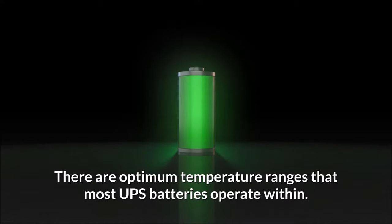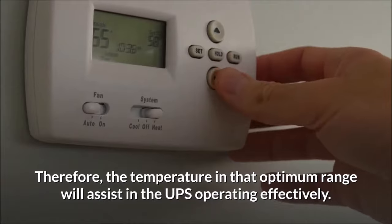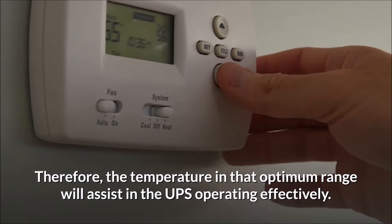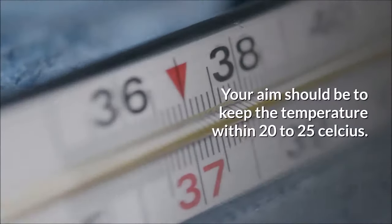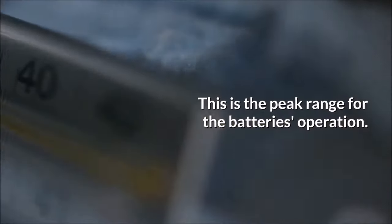There are optimum temperatures, temperature ranges that most UPS batteries operate within. Therefore, the temperature in that optimum range will assist in the UPS operating effectively. Your aim should be to keep the temperature within 20 to 25 Celsius. This is the peak range for the battery's operation.